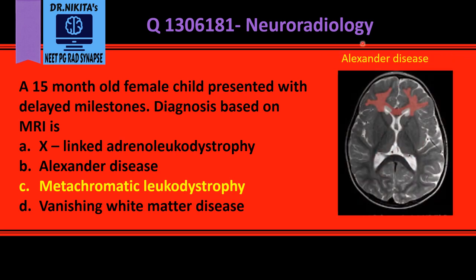Alexander disease — 'Alexander' starts with A, which comes first in the alphabet, meaning anterior — so it affects the anterior or frontal white matter. X-linked affects posterior white matter, and Alexander disease affects anterior white matter. This is how we differentiate: Tigroid pattern = MLD, X-linked = posterior, Alexander = anterior.